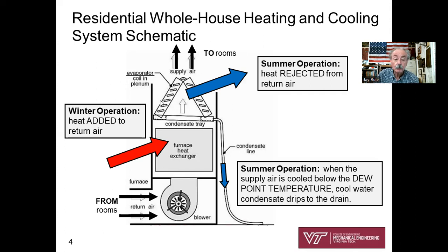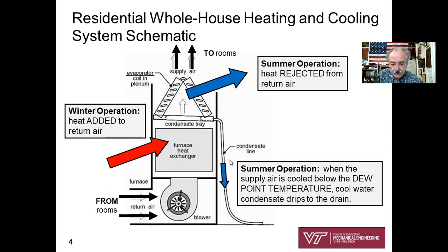In the summertime, we don't use the furnace — we use the evaporator section from a traditional vapor compression refrigeration cycle. These cold coils cool the air. Whether winter or summer, we get comfortable supply air going back to the room. In the summer, the evaporator rejects heat; in the winter, we add heat. In summertime, the evaporator is so cold it cools the flow below the dew point, and you get condensate dripping to the drain.